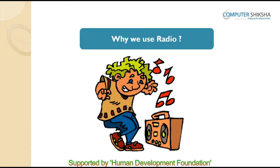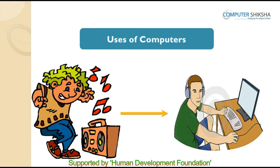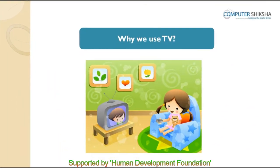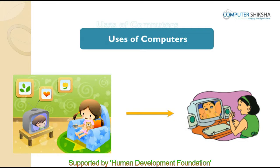Look at the picture in front of you and answer: why do we use a radio? We use the radio to listen to songs and news. But nowadays, we can listen to songs from a computer and we can even read the news from computers. Why do we use a TV? Earlier we used the TV to watch a film or cartoon, but these days we can use computers to watch films or cartoons also.